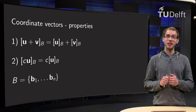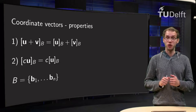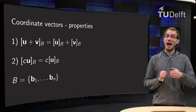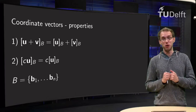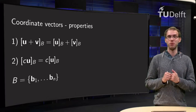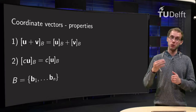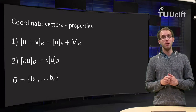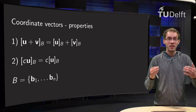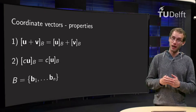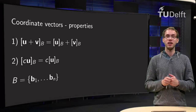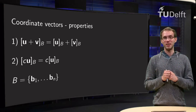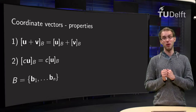If you want to establish linear independence in some general vector space, you can use coordinate vectors. And if you want to know whether a vector is a linear combination of other vectors in some general vector space, you can use coordinate vectors as well. This means we can apply all the techniques we already learned for vectors in Rn, like row reduction. And that's what you will learn in this video.